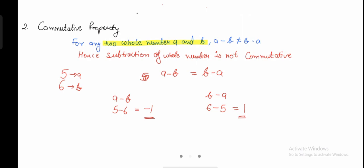When you interchange the positions, your answer does not come out to be the same. In the case of addition, doing 2 plus 1 gives 3, and 1 plus 2 also gives 3. But here with subtraction, 5 minus 6 and 6 minus 5 give different answers when you rearrange the order. This means the commutative property does not work for subtraction — the subtraction of whole numbers is not commutative.